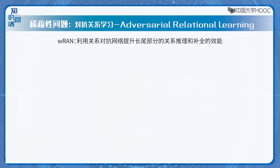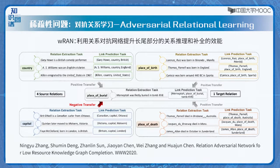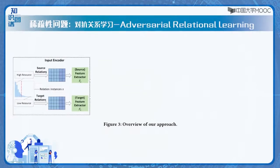也有很多模型关注知识图谱嵌入学习的稀疏性问题。例如，WRAN模型提出利用关系对抗网络来提升长尾部分的关系推理和补全的效能。这里的基本思想是利用训练资源比较丰富的关系，去增强长尾部分的关系推理的效果。知识图谱中的很多关系是有相关性的，例如Place of Burial与Place of Birth、Place of Death是相似的。通常那些常用关系的三元组是比较多的，我们就可以利用这些常用关系的三元组去增强相似关系比如Place of Burial的推理效果。这本质上是一个迁移学习的过程。WRAN是通过对抗学习的过程来实现从高资源关系（即Source Relation）向低资源关系（即Target Relation）的特征迁移学习，我们称之为对抗关系学习。